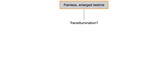As the name implies, transillumination is where you take a light and put it behind the scrotum, shining the light through from the back to the front of the scrotum. Whether or not the light goes all the way through tells you whether you're dealing with something cystic or something solid. If it's cystic, the light will pass all the way through. If it's solid, the light will be blocked at some point.